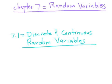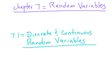Section 7.1, which is what this video is about, talks about discrete and continuous random variables. First I want to define what a random variable is, and then I want to define the difference between discrete and continuous — that's basically what's in Section 7.1.